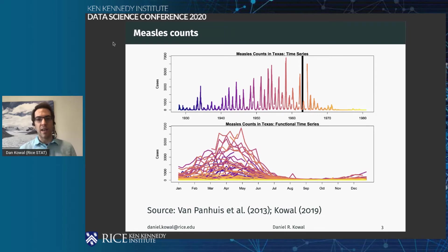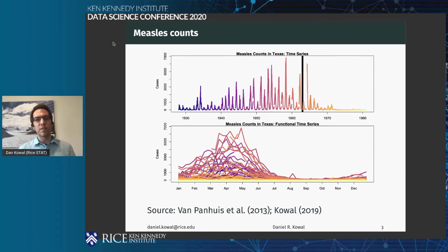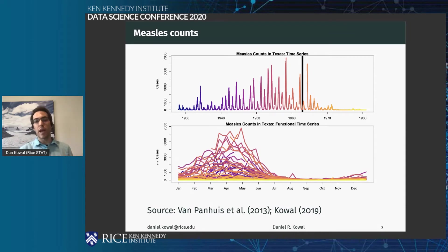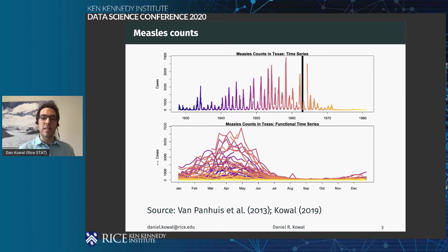One example of functional time series data I worked with was measles counts in Texas — historical data. You can see that there are clear seasonality trends; this is weekly case count data dating back pre- and post-vaccine. In the lower plot, I've folded these over as a function of time of year, so you can view it as one long time series or each year as a curve as a function of time of year. This is a different way to capture that seasonality, which is quite predictable when you see it in this plot.